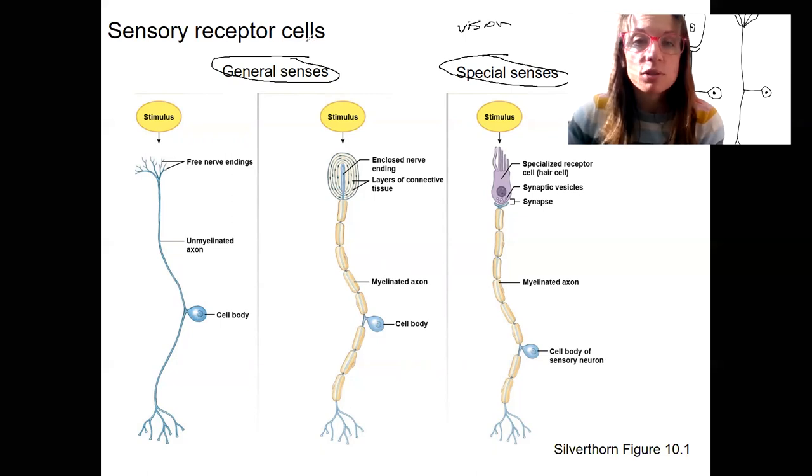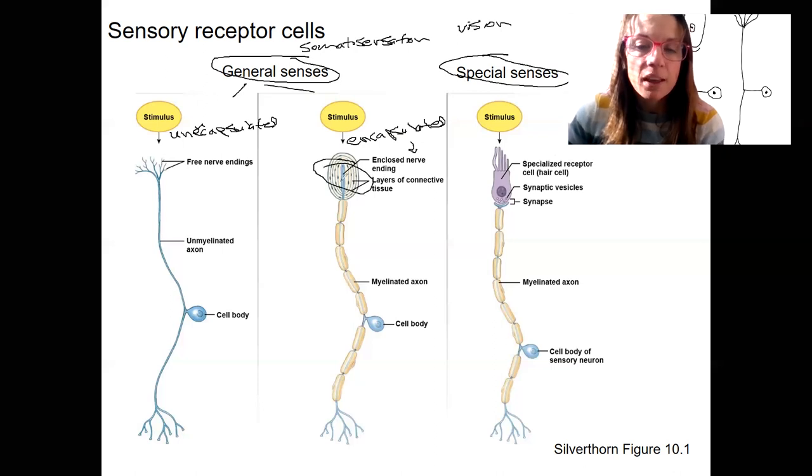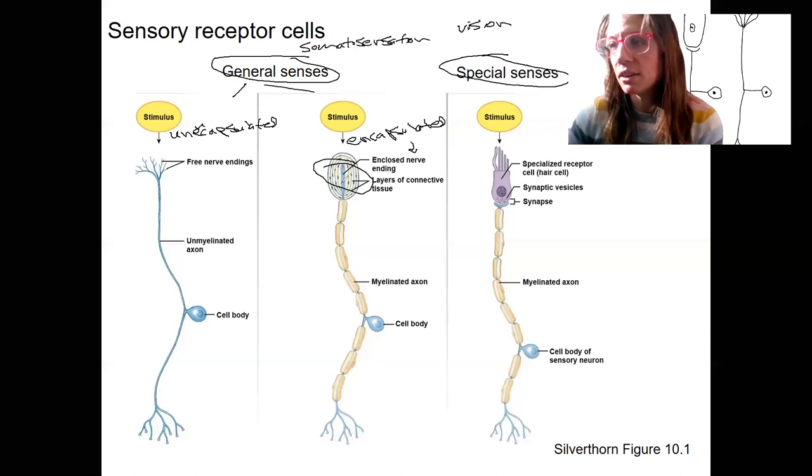General senses are a lot simpler. So this would be typically, this is also called somatosensation. Typically, it's various types of mechanoreceptors that allow for touch, but also pain and temperature. So these two are the general senses here. Free nerve endings is what's shown here. This is also called unencapsulated. And that's in contrast to encapsulated. So this enclosed nerve ending here is embedded in these layers of connective tissue that allow it to respond to different stimuli. So it's a little bit more specialized in terms of what it responds to. We'll see some of these.